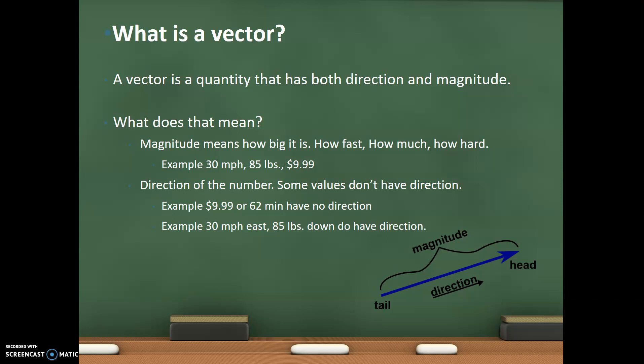The direction is which way is it going? Some values don't have direction. An example of that is like $9.99 has no direction. It's just money. Or 62 minutes, it doesn't have a direction.